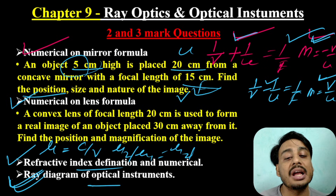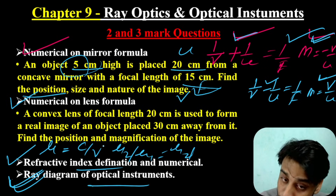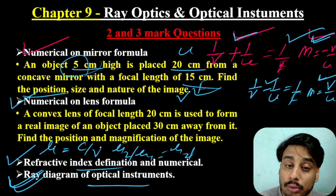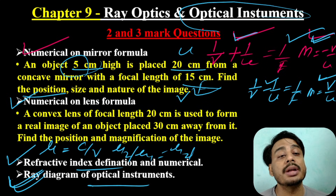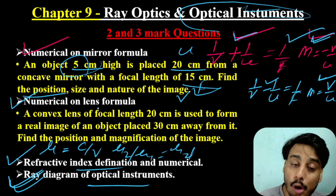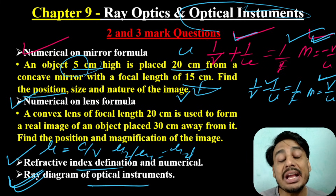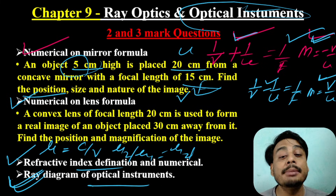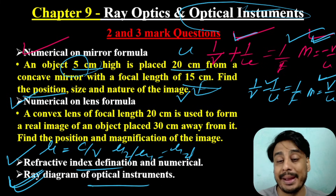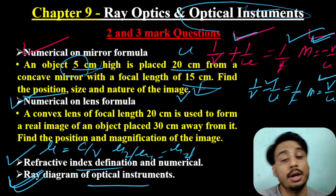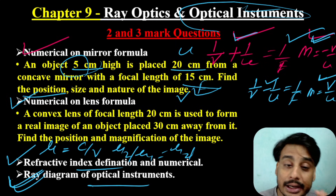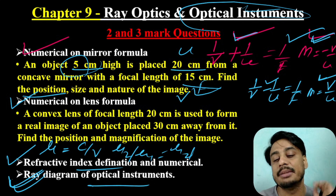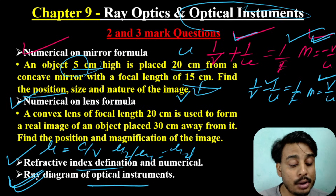Ray Diagram of Optical Instruments: Simple Microscope, Compound Microscope, and Telescope. This chapter is Ray Optics — optical instruments. The ray diagram is very practical and is a minimum requirement in the board exam. If you practice the ray diagram, the simple microscope carries 2 marks and the compound microscope carries 3 marks. If you draw the ray diagram, you will get 3 marks. This is an important point.